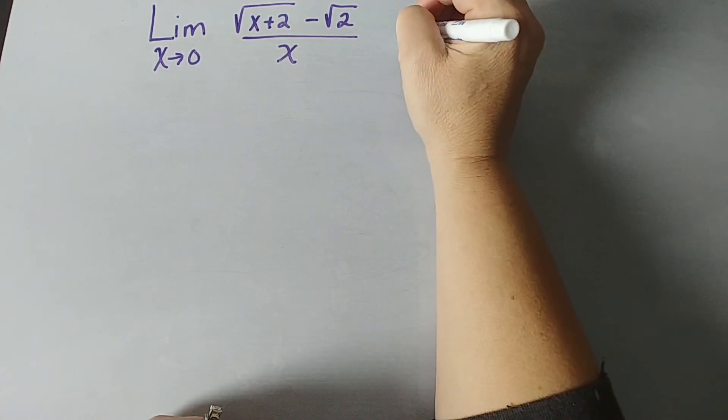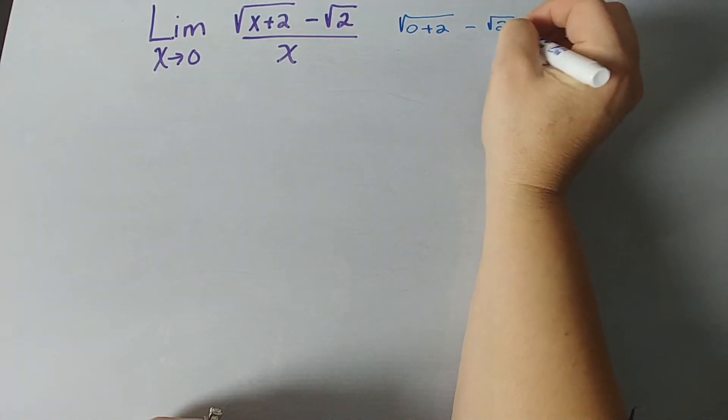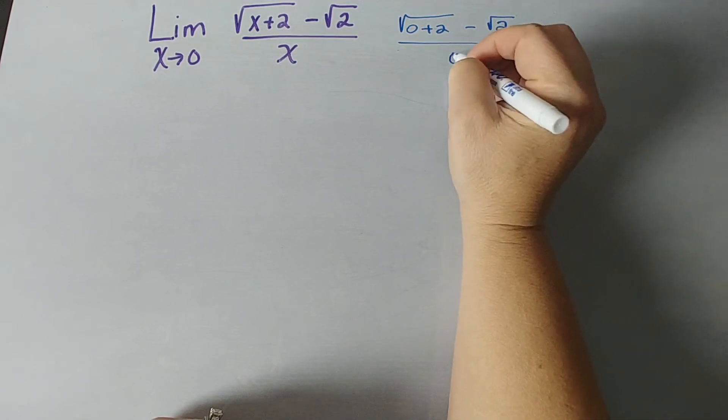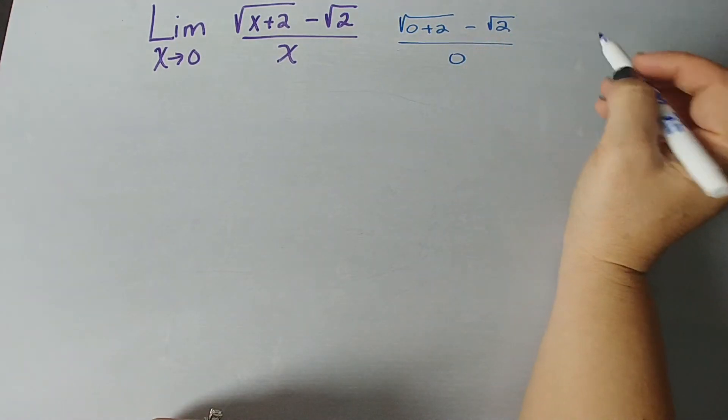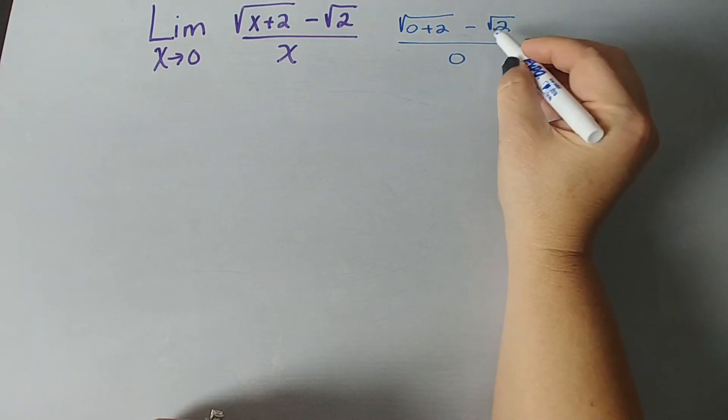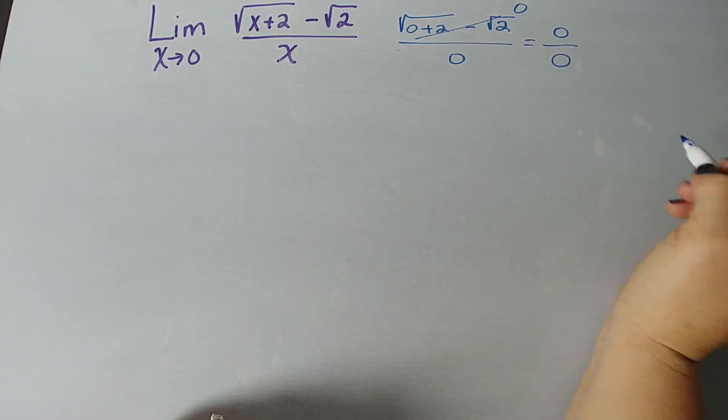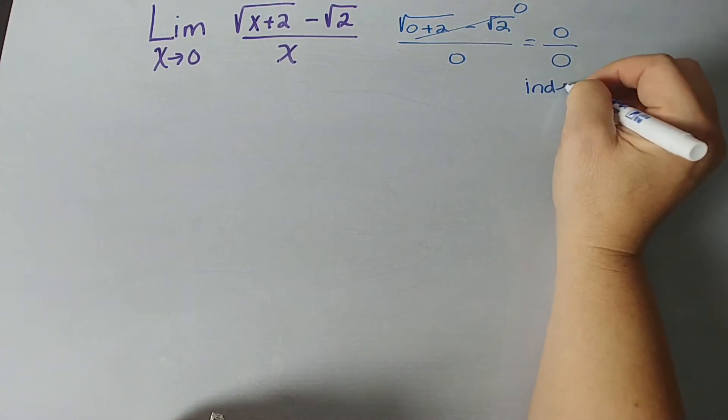So, let's see. If I have the square root of 0 plus 2 minus the square root of 2 all over 0. We know this. We can't have this. So, there's the problem there. So, square root of 0 plus 2 is square root of 2. Square root of 2 minus 2 is simply 0. So, once again, we get 0 over 0, which is our indeterminate form.